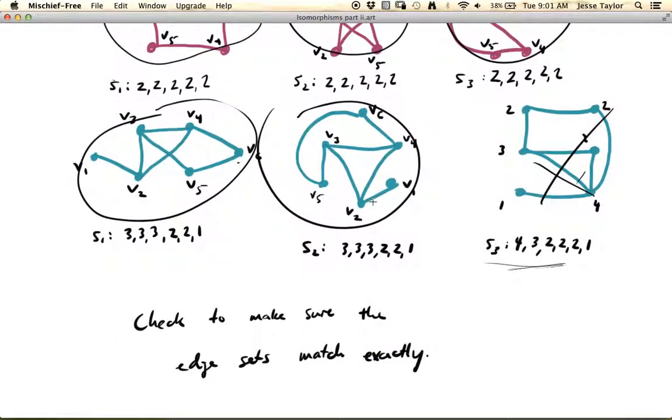So like V1, V2 is an edge here. V1, V2 is an edge here. V3, V5 is an edge here. V3, V5 is an edge here. Okay, so that's what you're actually wanting to check. So that wraps up the last things I wanted to mention about isomorphism.